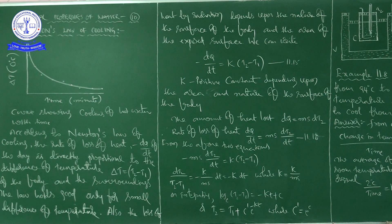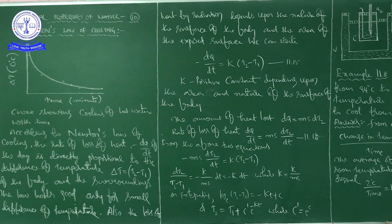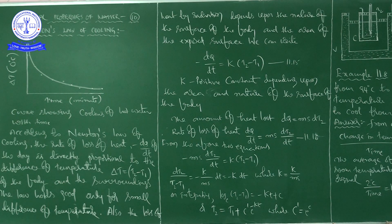The graph is drawn from the activity we just discussed using the calorimeter, water, and thermometer. The activity shows that a hot body loses heat to its surroundings in the form of heat radiation, and the rate of loss of heat depends on the difference in temperature between the body and its surroundings.